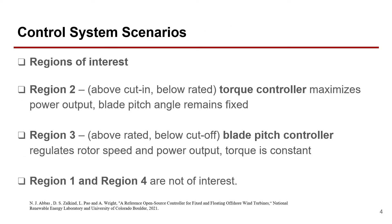Now let's talk about control system scenarios. We'll need to look into the 5 megawatt operating regions. A wind turbine has 4 operating regions defined by wind speeds. Region 1 is wind speeds below the turbine's cut-in wind speed — the turbine is not operational and is not an area of interest for control purposes. This is also the case with Region 4, where wind speeds are above the turbine's cut-out wind speed. Region 2 is when wind speeds are above cut-in but below rated; here the torque controller maximizes power output and the blade pitch angle remains constant. In Region 3, when wind speeds are above rated but below cut-out, the blade pitch controller regulates rotor speed and the generator torque remains constant. As we'll see in the simulations, the blade pitch controller kicks in at Region 3 while it remains constant in Region 2.